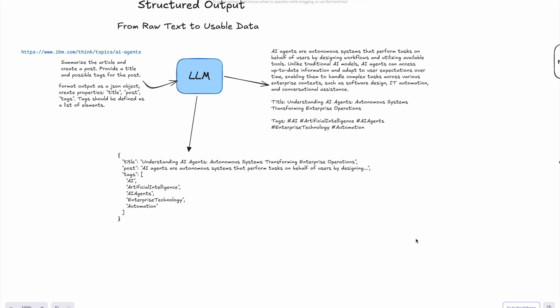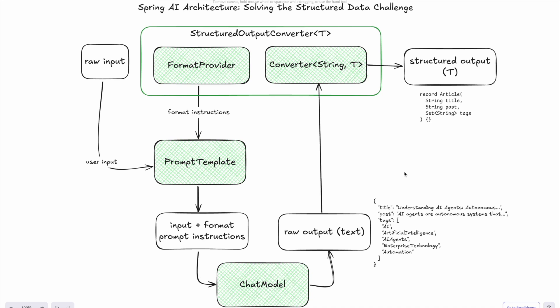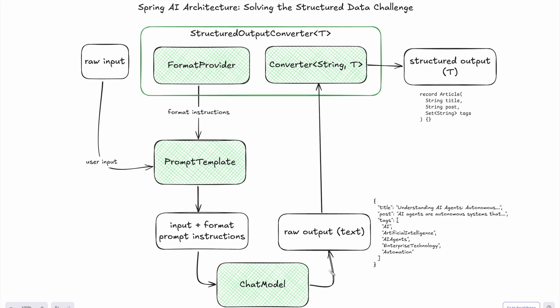Now let's switch to how this is implemented in Spring AI, because this is the goal of today's video. Without any structuring, the way we worked in previous sessions where we were generating posts — we created raw input from a template and sent it directly to the chat model, and we had raw output as text from the chat model, which we just sent back to the user. But now we're trying to complicate the structure a bit.